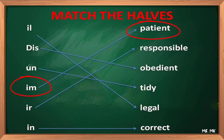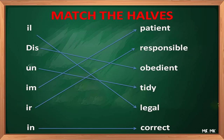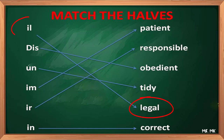For example, 'responsible' — we add 'ir' to get 'irresponsible.' The question is: how do we know whether to add im, il, ir, or in? There is a general rule, though not completely universal. For example, with 'patient,' the word starts with P or M, so the prefix is 'im' automatically. Similarly, 'legal' starts with L, so we add 'il' to get 'illegal.' But this is not a fully general rule, as you will see.